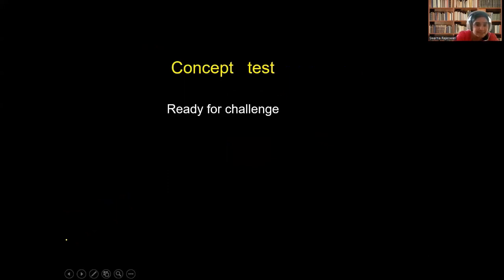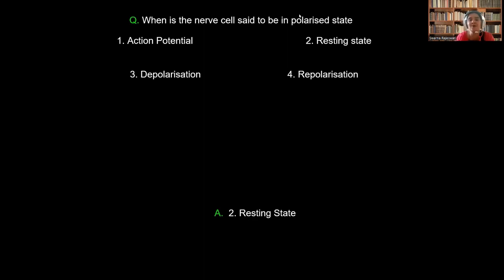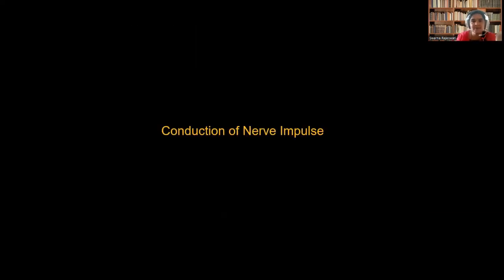Let us take a small concept test. When is the nerve cell said to be in the polarized state? Options: action potential, resting stage, depolarization, repolarization. When the nerve cell is in the polarized state — outside positive and inside negative — it is only during the resting phase. So the correct answer is resting stage. Now let us go into the conduction of the nerve impulse.